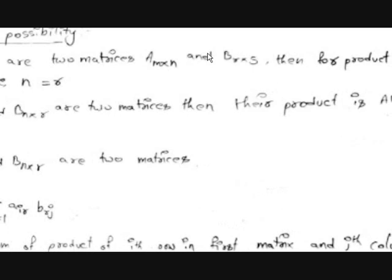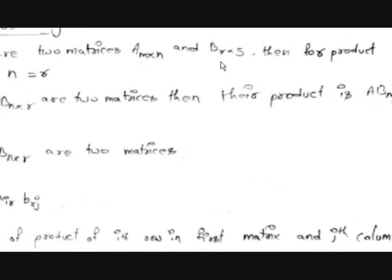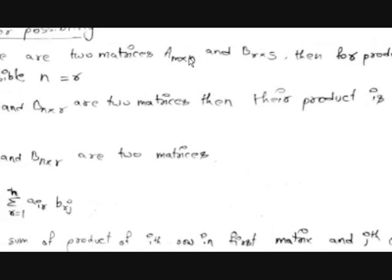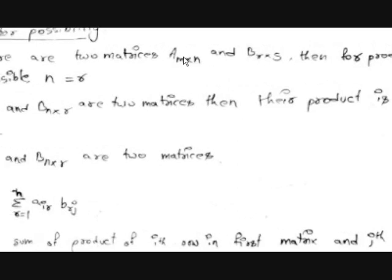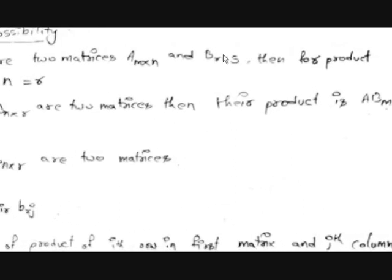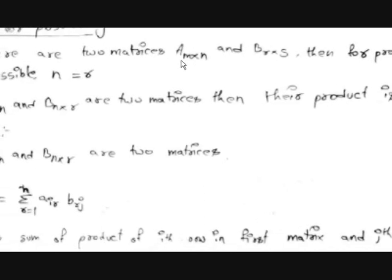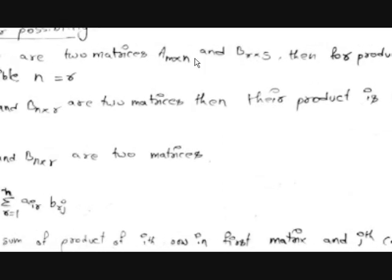Now, here N should equal R is the condition for AB. But what if we want to multiply B and A? For BA, the first matrix becomes B, so the number of columns in B, which is S, should equal the number of rows in A, which is M. So: for AB, N should equal R; for BA, S should equal M.